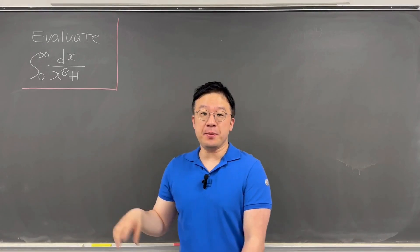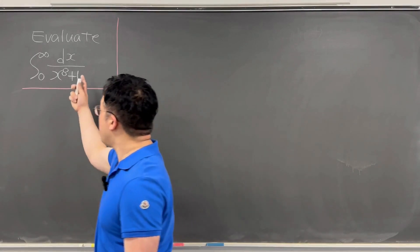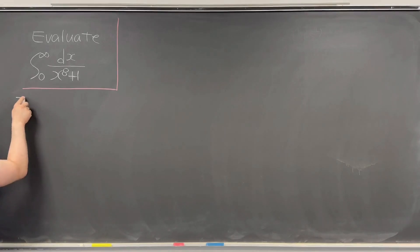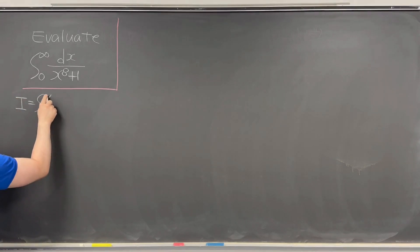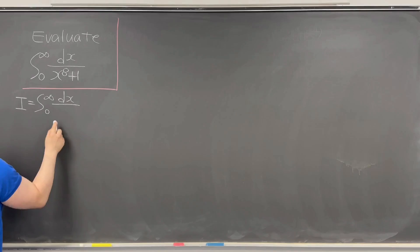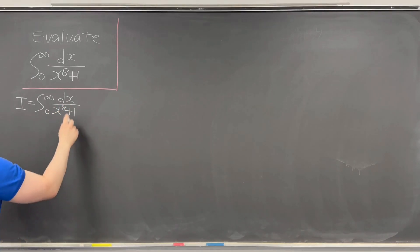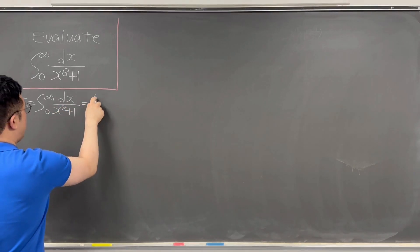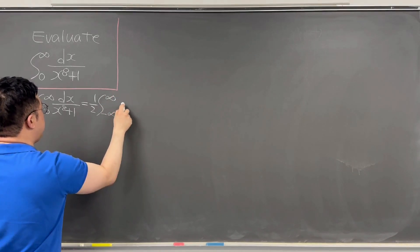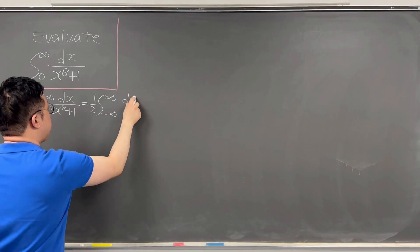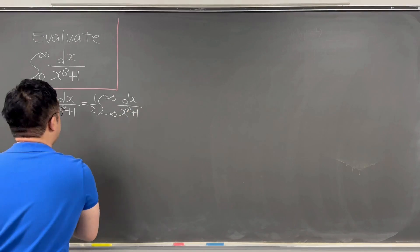For this integral, I'll be using the contour method with residues. I'll be calling this integral I. This integral from 0 to infinity of dx over x⁸+1 is the same as one-half times the integral from negative infinity to infinity of the same dx over x⁸+1.